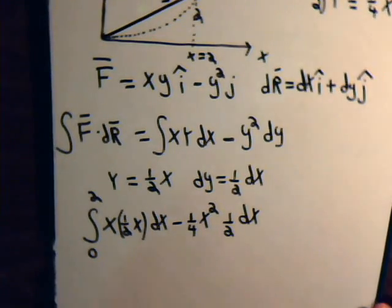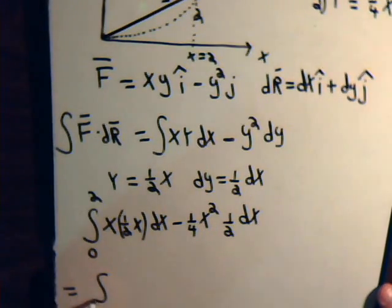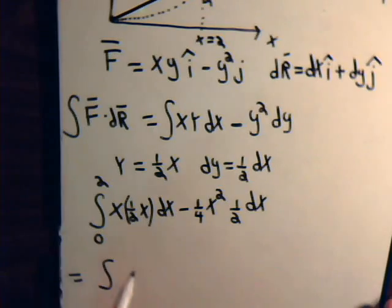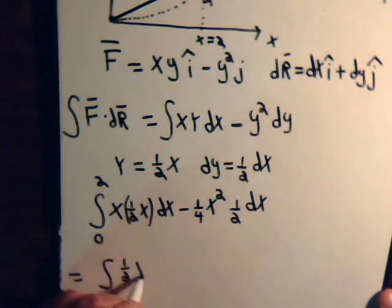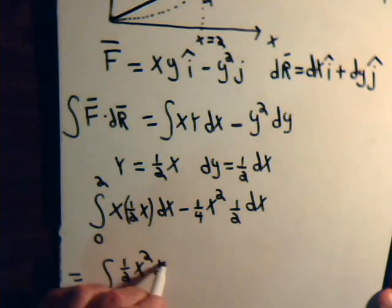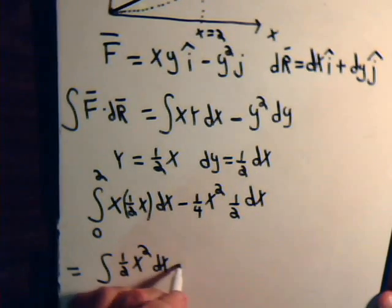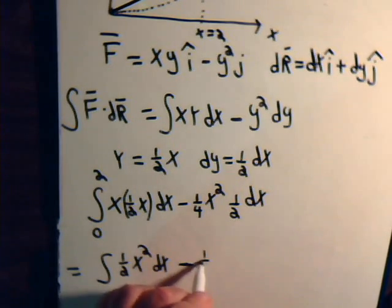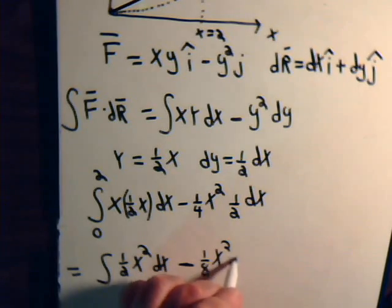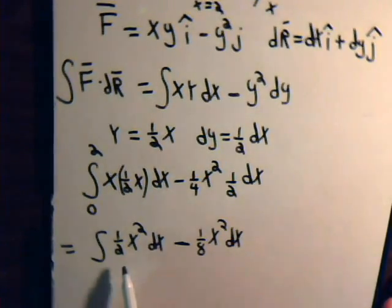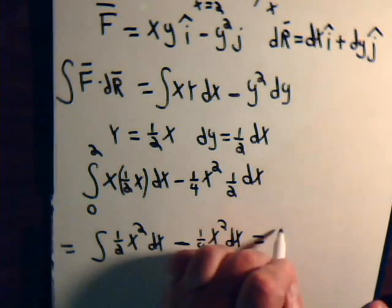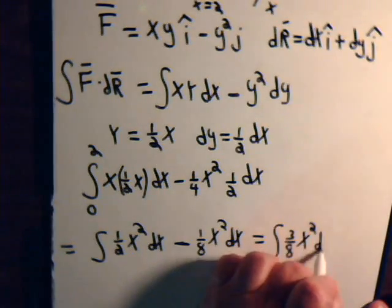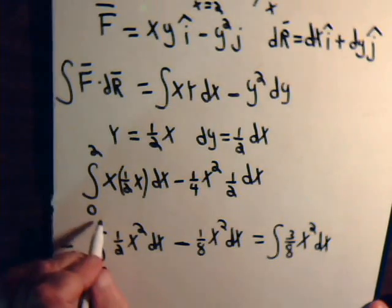So, it's all set up for us. This will equal, from here we'll have the integral of one-half x squared dx. And here we have minus one-eighth x squared dx. This is four-eighths minus one-eighth, so that's the integral of three-eighths x squared dx. And x is going from zero to two.